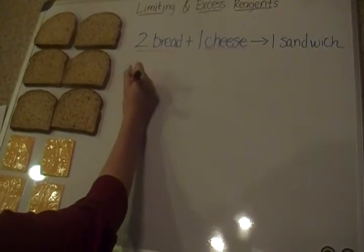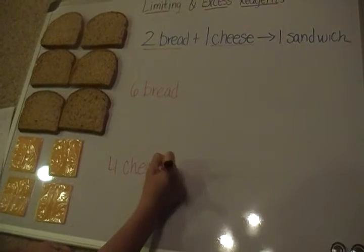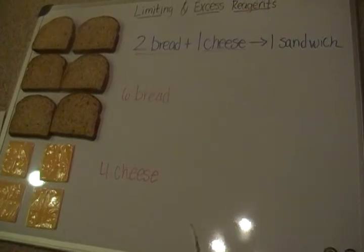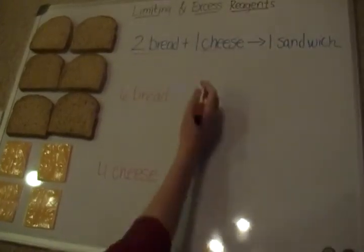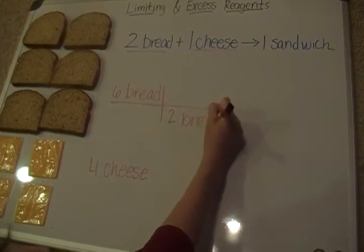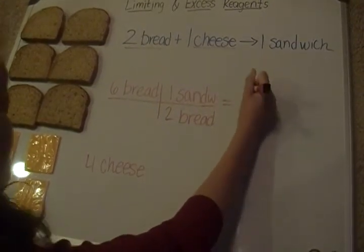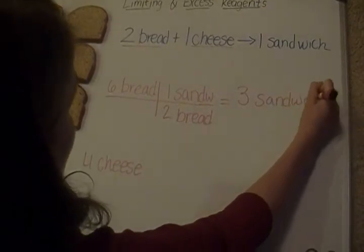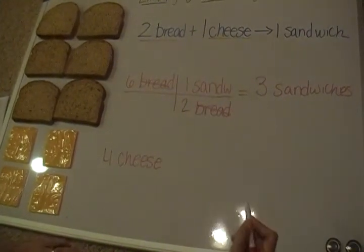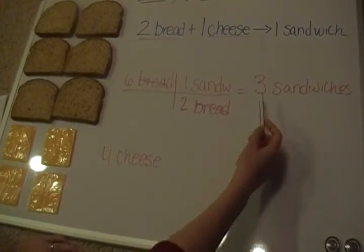We have right now six pieces of bread and four slices of cheese. I'm going to focus on one of these at a time. Just looking at our six pieces of bread — if I have six pieces of bread and more than enough cheese, then with six pieces of bread, if it takes two pieces of bread to make one sandwich, I'm able to make three sandwiches. I'm showing you with dimensional analysis because later on when we do this with different chemicals, it's going to make more sense if we write it this way now.